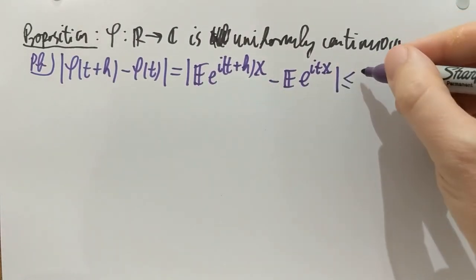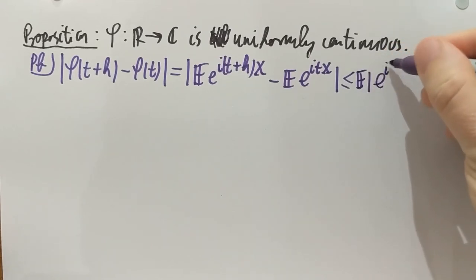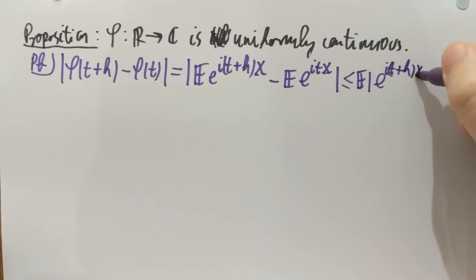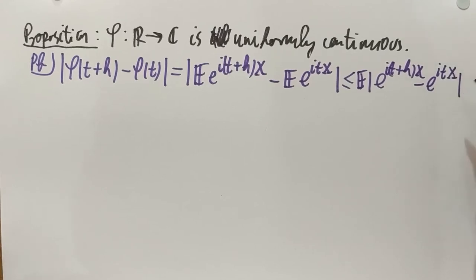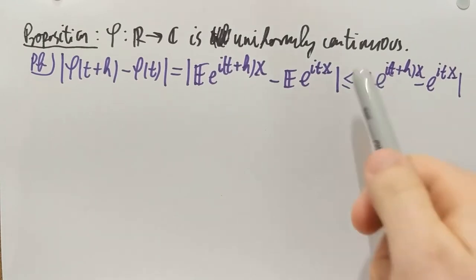So, if I do that, then of course, I stop writing an equality. It's going to be an inequality. If you bring the absolute value inside the expectation, that will always make the expectation larger than or equal.